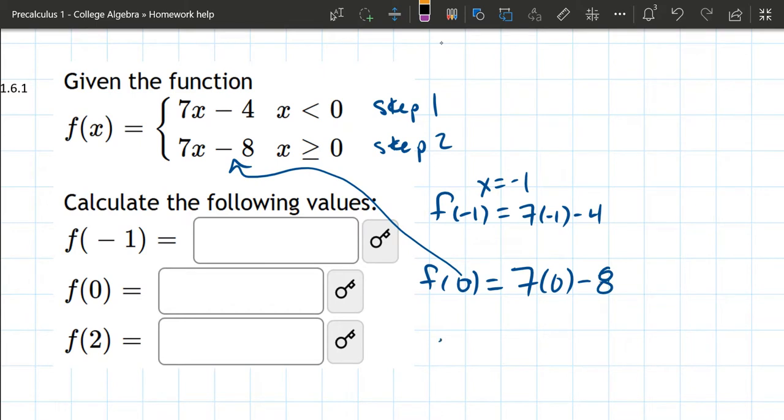And then we'll do the last one, f of 2. Now positive 2 should be a little more clear because it's definitely greater than or equal to 0. So f of 2 is going to be plugged into step 2.